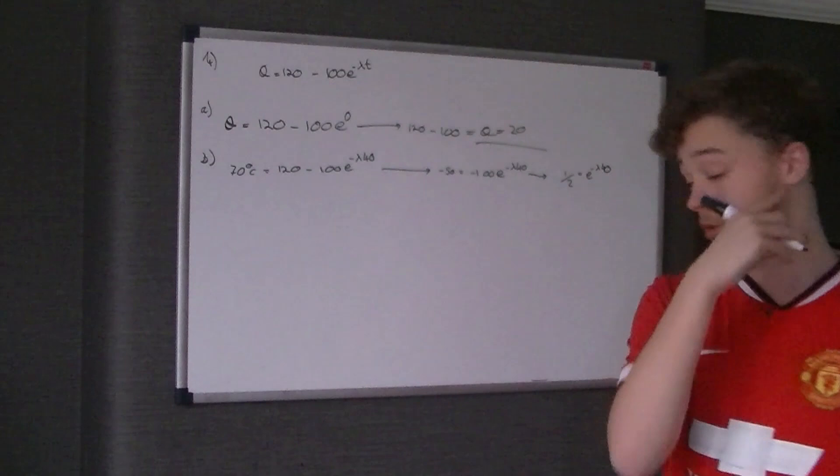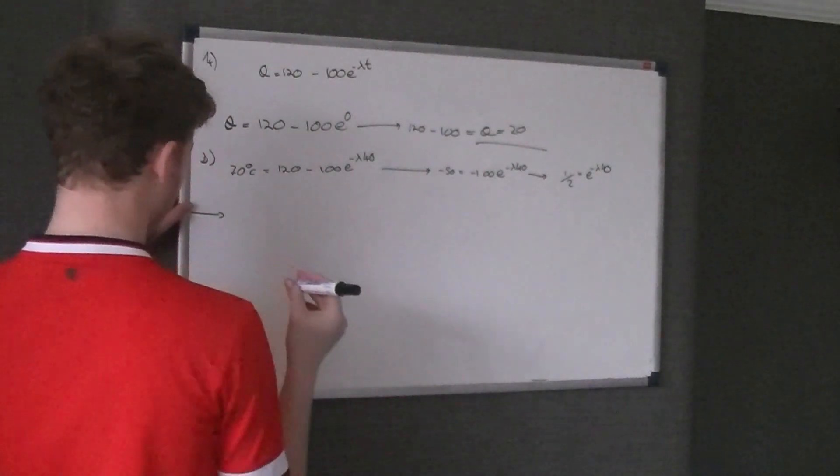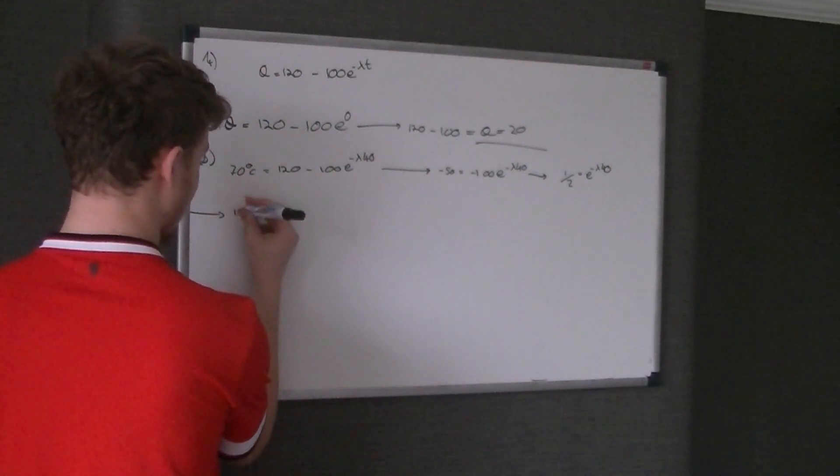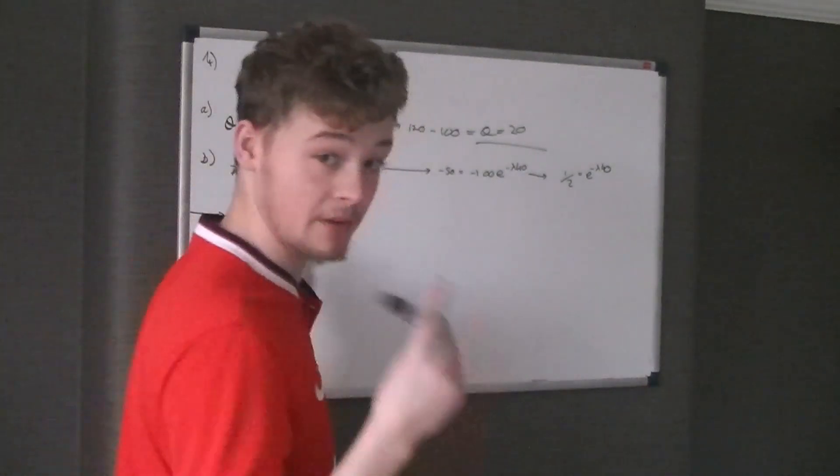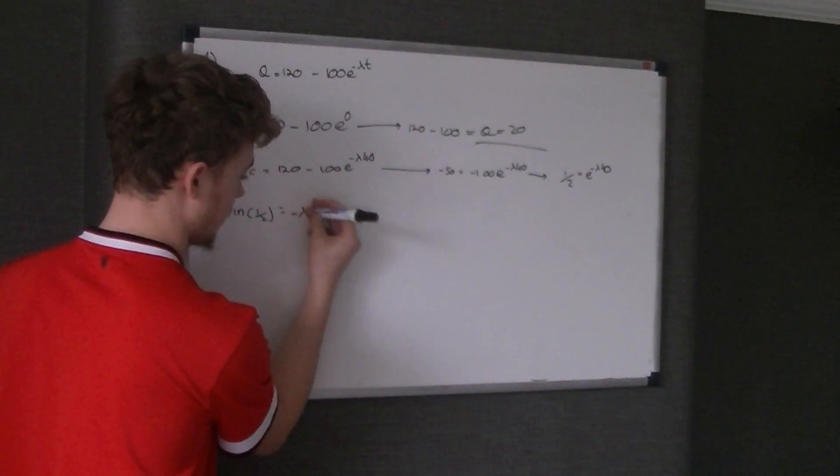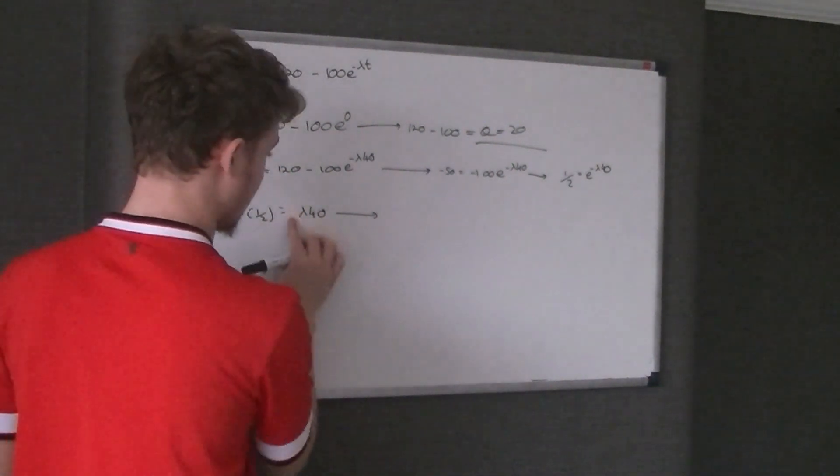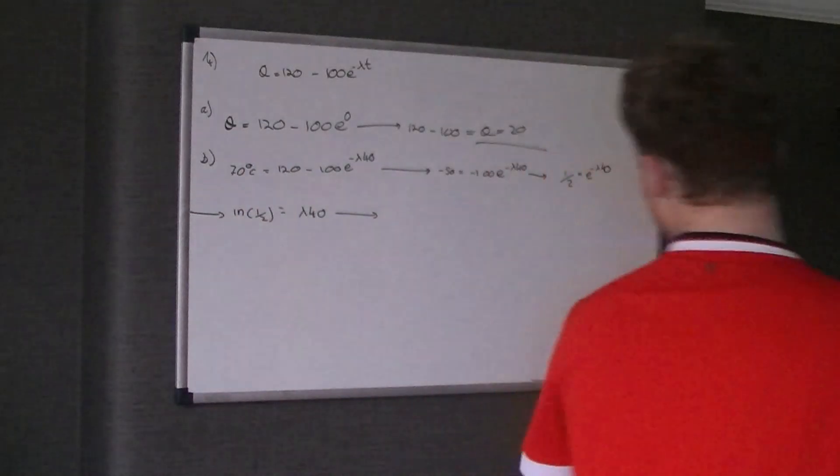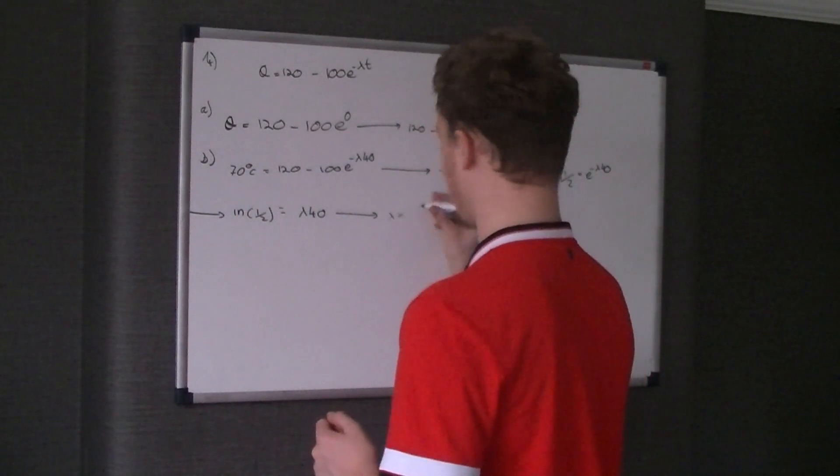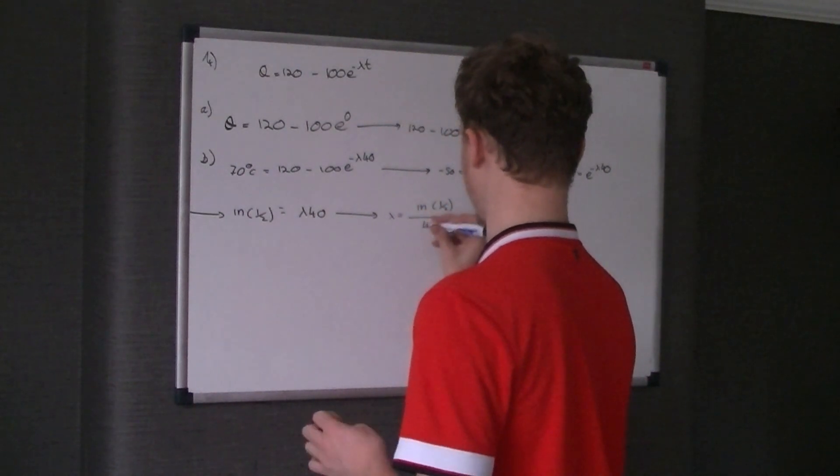Now obviously what we're going to do now is get rid of this e. I'm going to do that by natural logging both sides. So ln of a half. And keep it as a half, not 0.5. And that's the key to this question. And that's equal to negative lambda 40. So therefore, lambda is equal to ln of a half over 40.